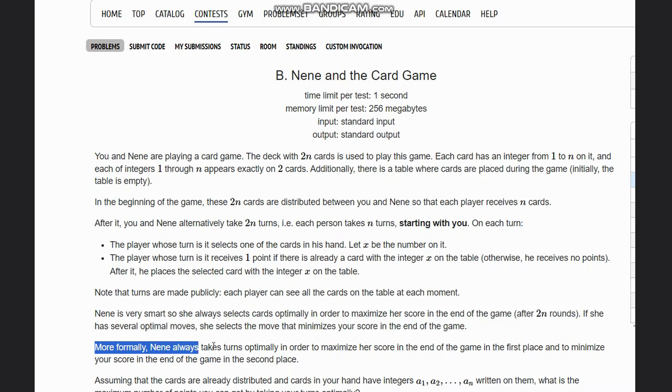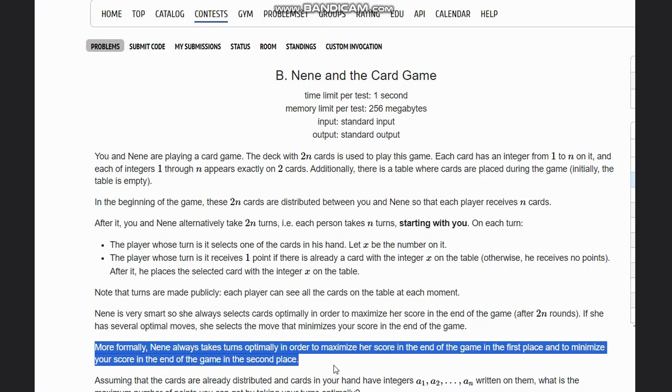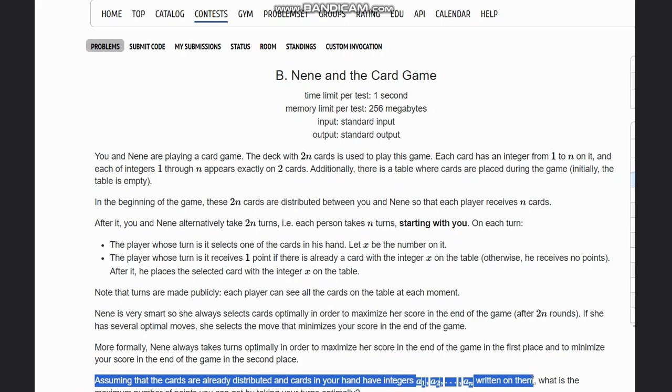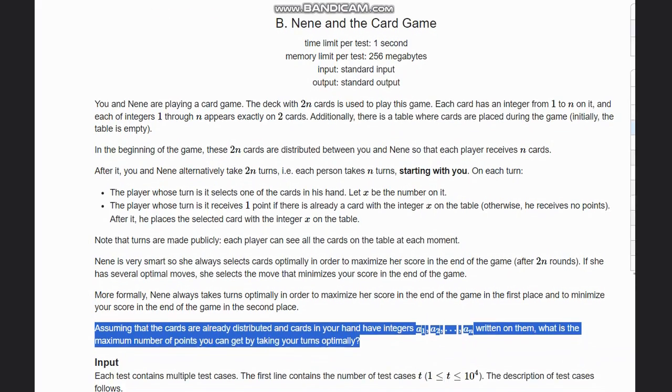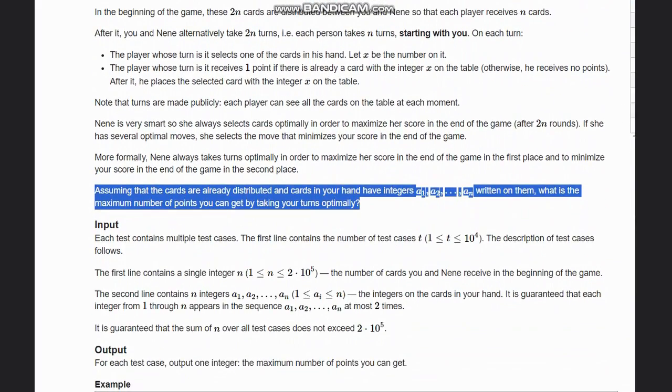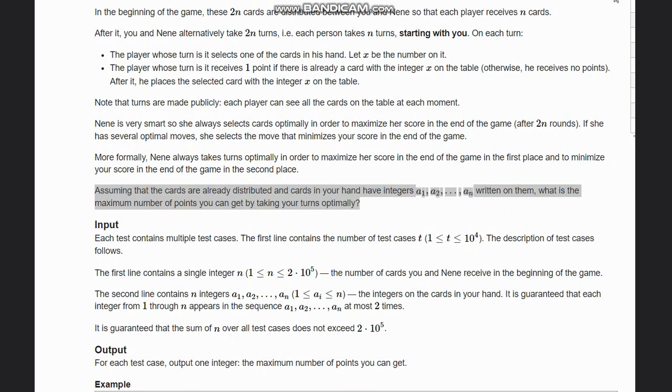More formally, Neen always takes turns optimally in order to maximize her score in the first place and to minimize your score in the second place. Assuming that cards are already distributed and cards in your hand have integers a1 to an written on them, what is the maximum number of points you can get by taking your turns optimally?